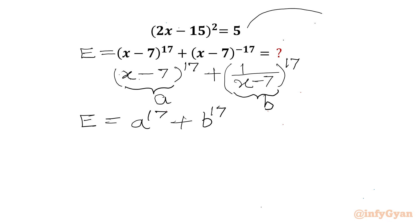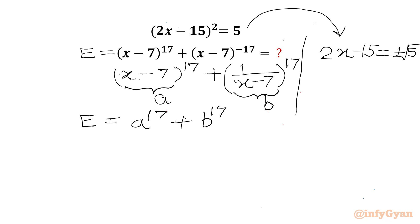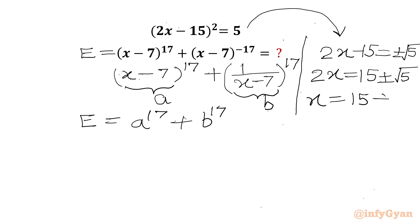Now I will consider the given equation and take the square root of both sides. So 2x - 15 = ±√5. Adding 15 to both sides: 2x = 15 ± √5. Dividing both sides by 2: x = (15 ± √5) / 2.